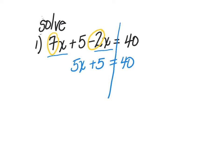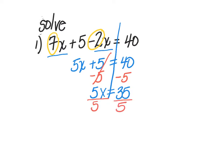Now it's time to get my constants together on the opposite side. I need to move the positive 5 by subtracting 5 from both sides — we undo something by doing the opposite. The 5 and the minus 5 zero out, leaving 5x = 35. Then the last step is to divide by the coefficient 5. Dividing both sides by 5 gives x = 7.